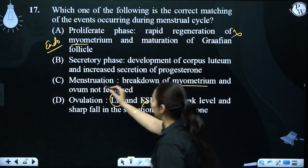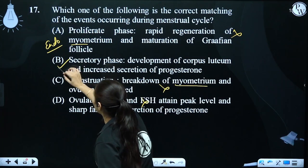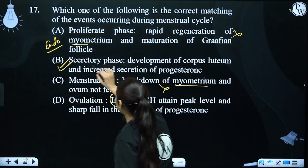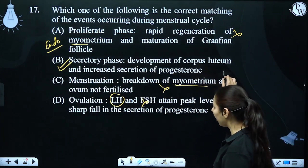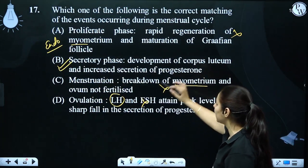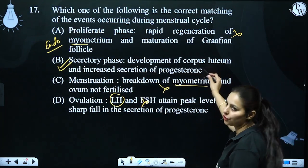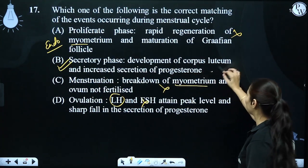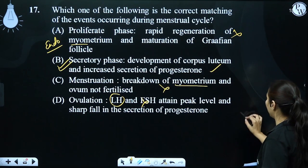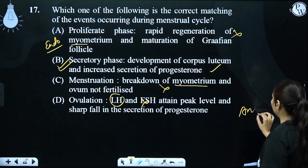So the secretory phase involves development of corpus luteum and increase in the secretion of progesterone. That is the correct match. Therefore, the answer is B.